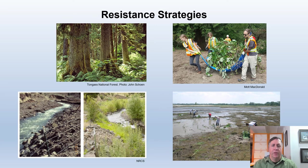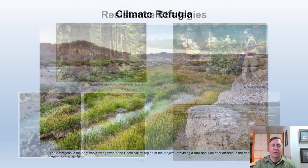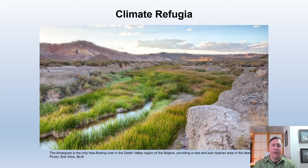Resistance strategies include things like protecting existing ecosystems from development, over-harvesting, and stressors like fire, disease, and invasive species. They also include restoration, like restoring degraded streams and planting riparian vegetation, restoring wetlands and dune systems, and other ecosystems. Resistance strategies also include protecting climate refugia, which are areas that heat up slower or remain moist as the climate changes.